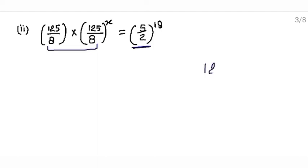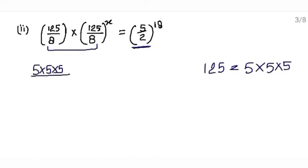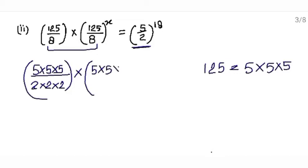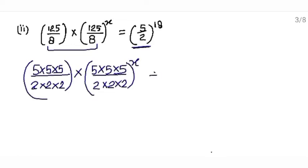This 125 can be written as 5 × 5 × 5. So write it here: 5 × 5 × 5. This 8 can be written as 2 × 2 × 2. Again this can be written as 5 × 5 × 5, and the denominator is 5 × 2 × 2, and the power is x. This equals 5 upon 2 raised to the power 18.